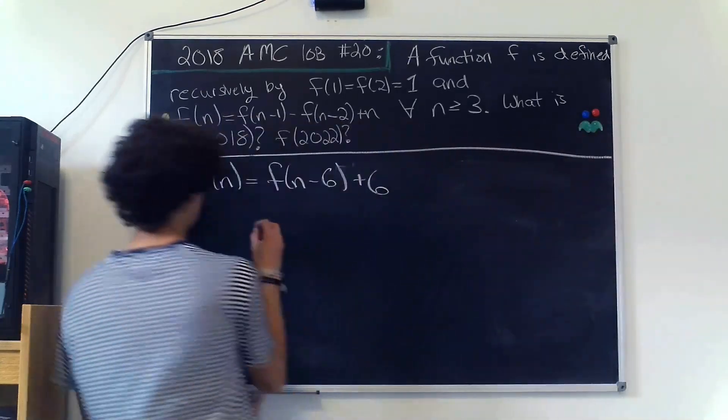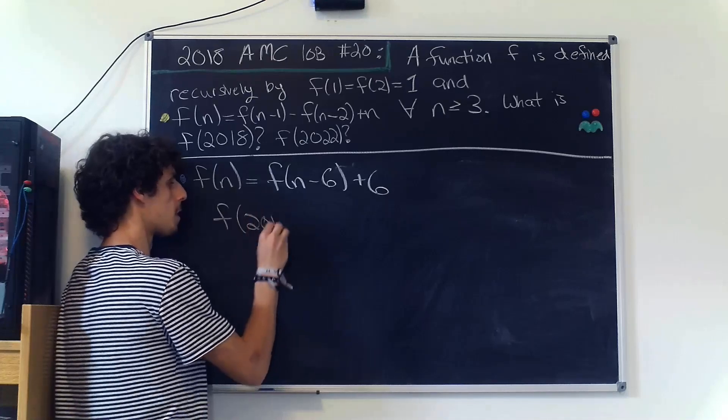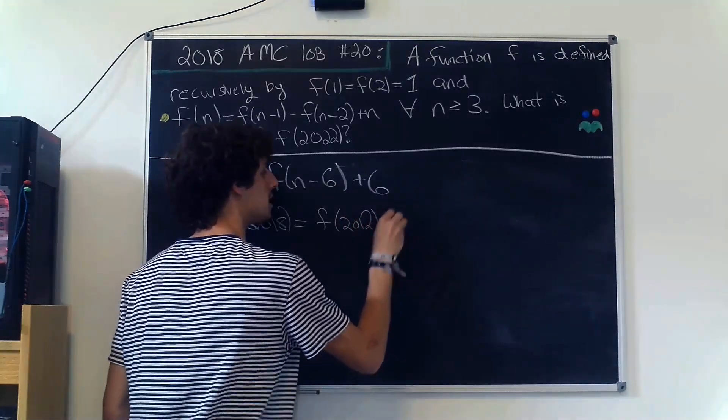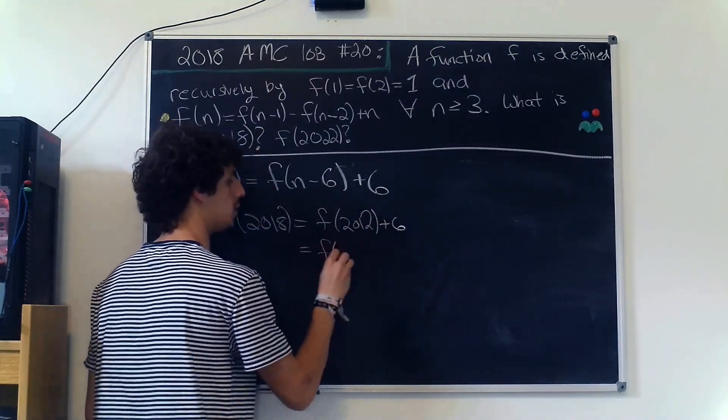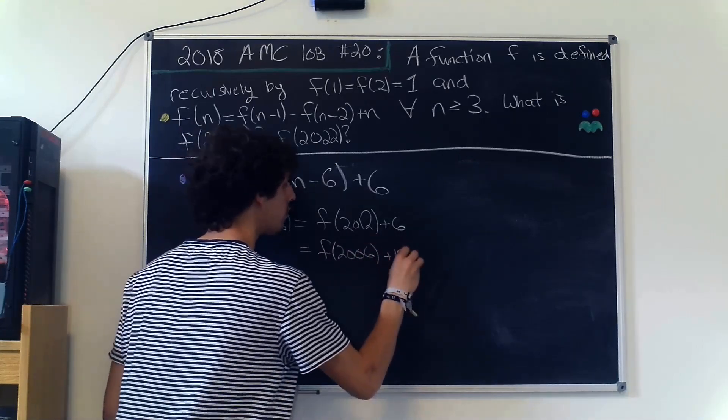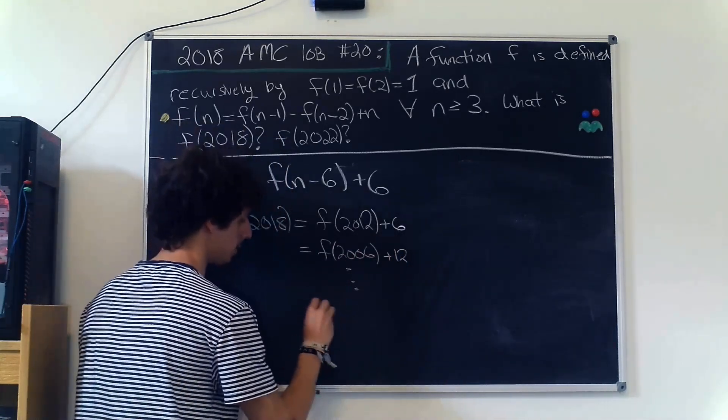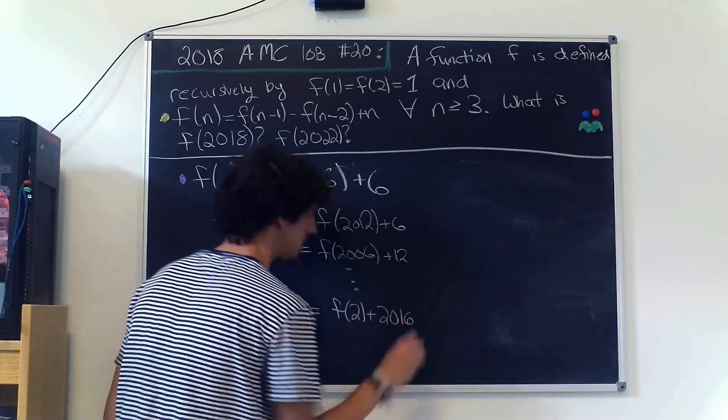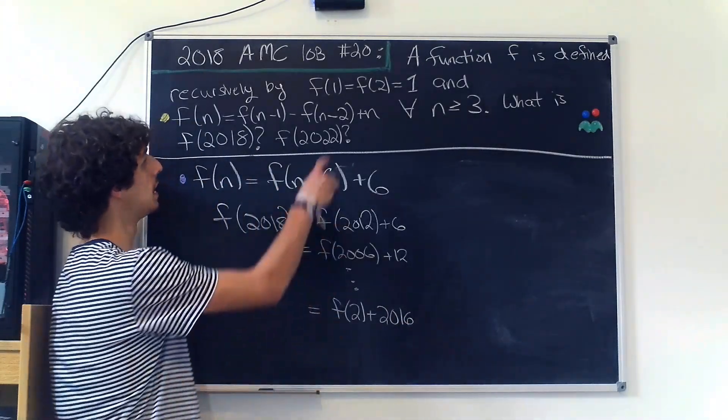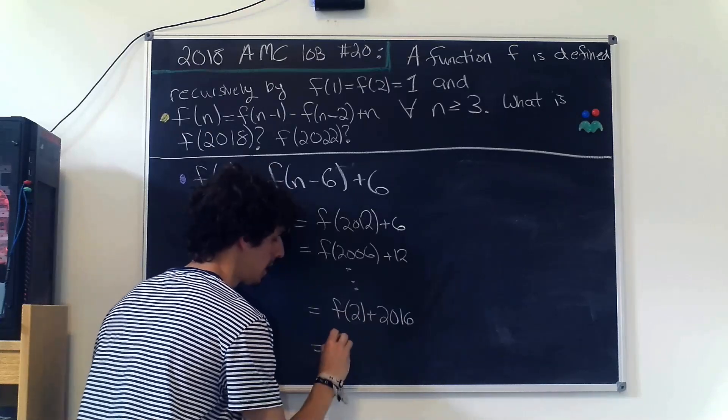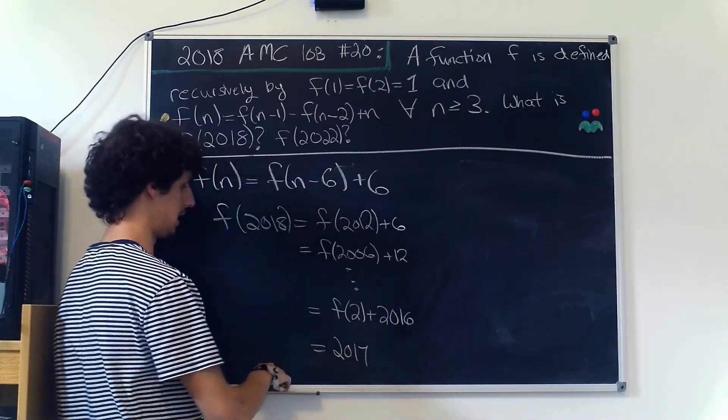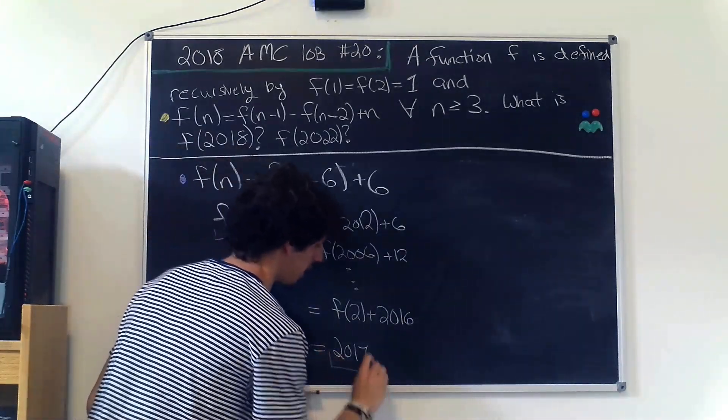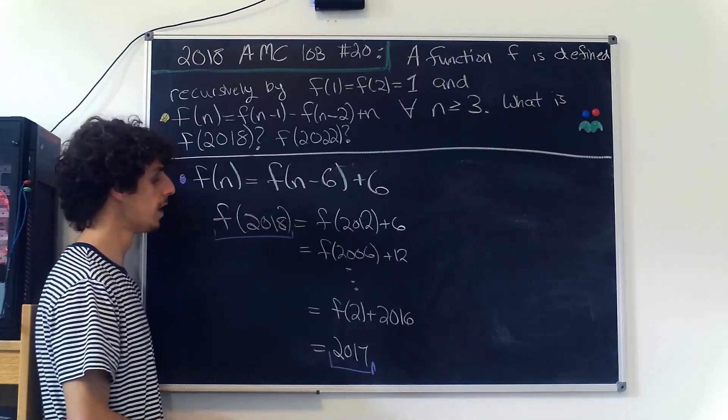So let's do f(2018) first. We want to reduce it by 6, so we'll have f(2012) plus 6, and that's equal to f(2006) plus 12. And we can do this over and over again until we get all the way down to 2 plus 2016. But then we know that f(2) is equal to 1 by our initial condition up here, and so this is equal to 2017. And so if we compare the extreme left-hand side and the extreme right-hand side, we find that f(2018) is in fact equal to 2017.